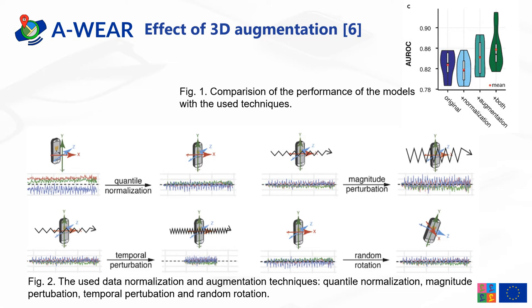The results are visible on the right side. For the original data classification, including normalization, augmentation, and the above approaches, you can see what kind of augmentations were used — perturbation of magnitude, temporal perturbation, or random rotation.